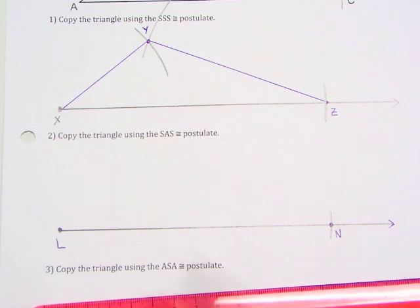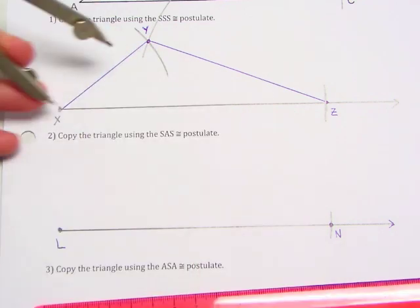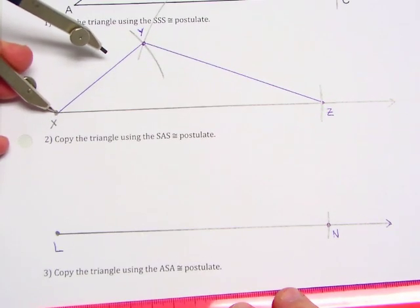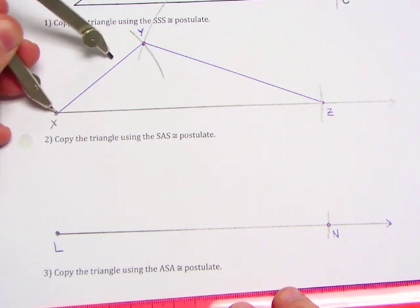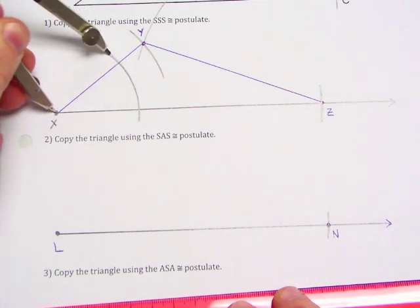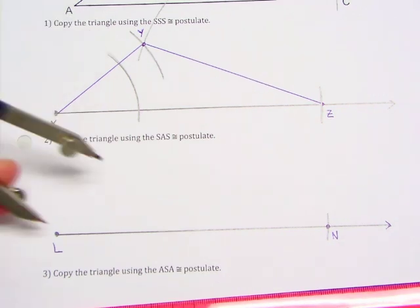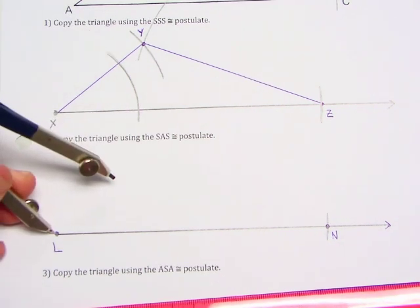We're going to use the techniques we learned to copy an angle. We basically put our point of our compass on vertex X and then we make an arc that intersects both rays. And we copy that arc onto vertex L.